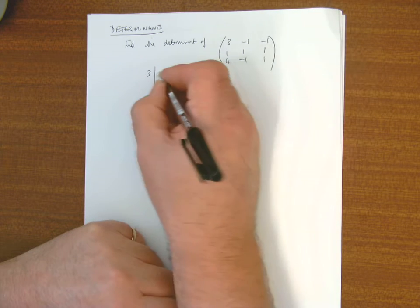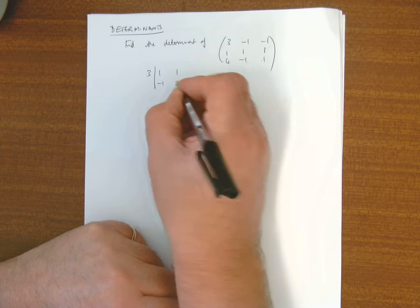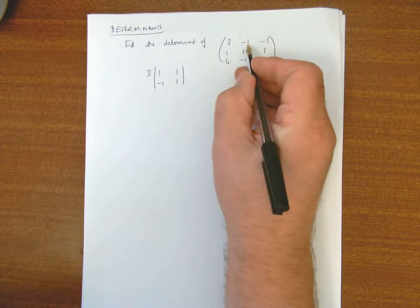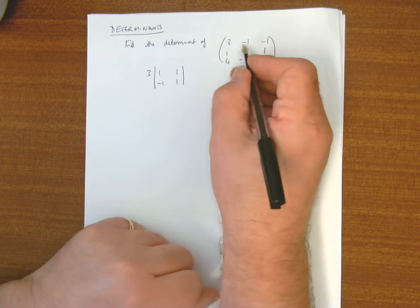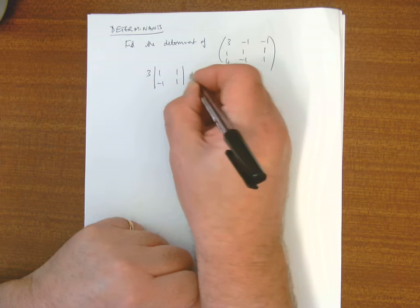So that'll be 1, 1, minus 1, 1, and the second one, so it's minus the second one, so it'll be a minus minus, so that turns to a plus 1.